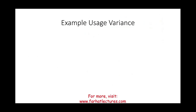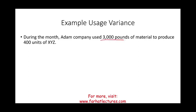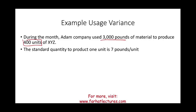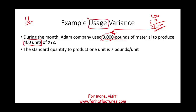We could also have a usage variance. During the month, Adam Company used 3,000 pounds of material to produce 400 units of XYZ. The standard quantity to produce one unit is 7 pounds, so we should have used 400 × 7 = 2,800 pounds. We actually used 3,000 pounds — 200 pounds more than standard — and we also paid $2 more per pound.